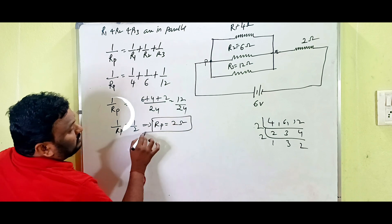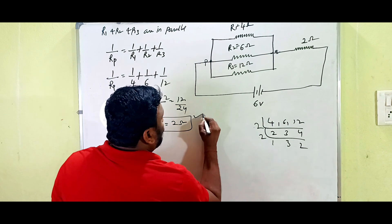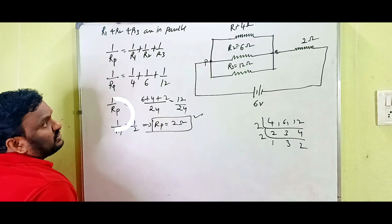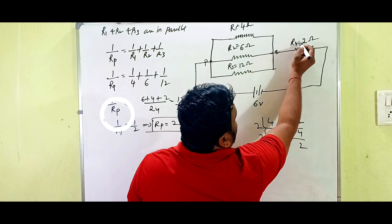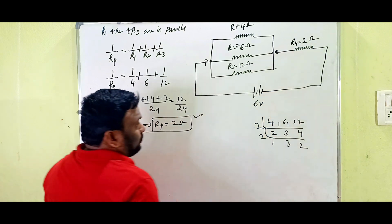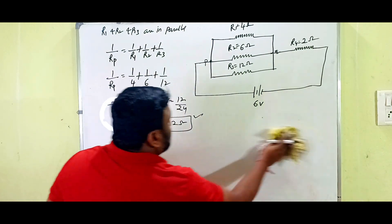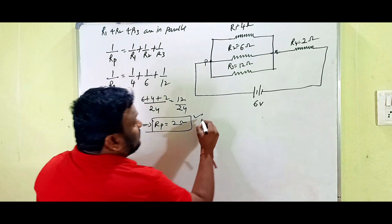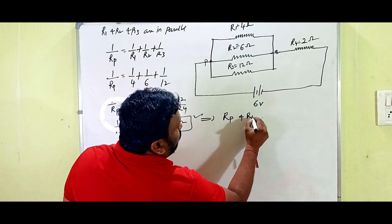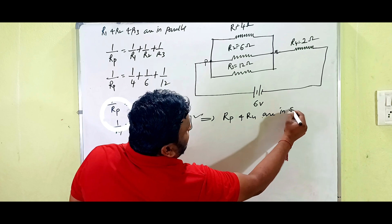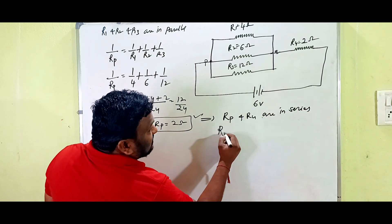Now, Rp is 2 ohms and R4 is also 2 ohms. Rp and R4 are in series, so the total resistance R_total = Rp + R4 = 2 + 2 = 4 ohms.